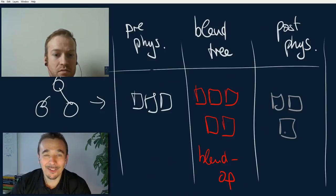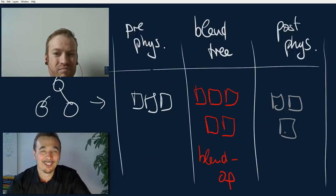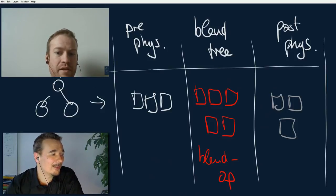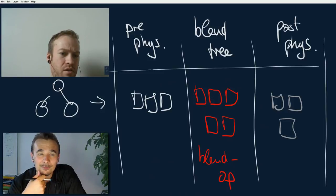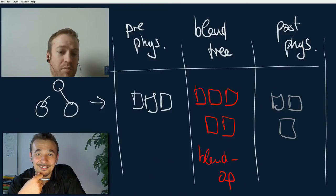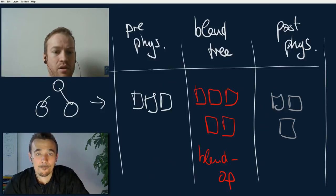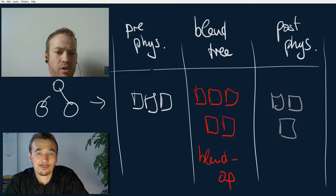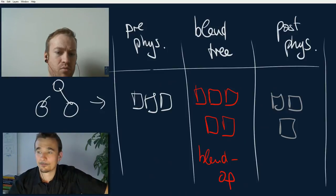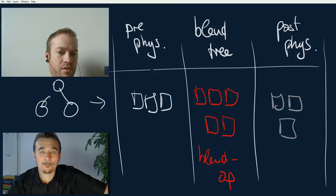Have animation middleware been rewritten over the years? There aren't many animation middleware — I can name two or three: Havoc animation, Emotion Effects, and Morpheme. Morpheme made a big change between version two and three, going all in on the SPU architecture. Their tooling is really good in terms of user experience. The key takeaway is: it doesn't matter how good your tech is — if your tool is bad, your tech is bad. Nobody's going to understand all the fancy stuff if they can't use it.